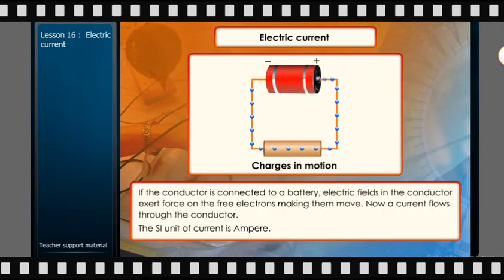If the conductor is connected to a battery, electric fields in the conductor exert force on the free electrons making them move. Now, a current flows through the conductor. The SI unit of current is ampere.